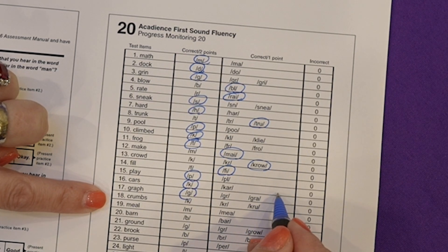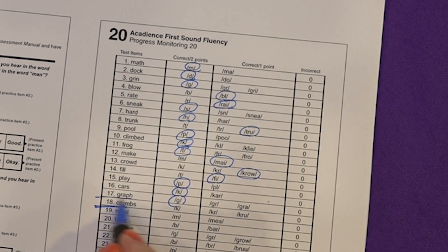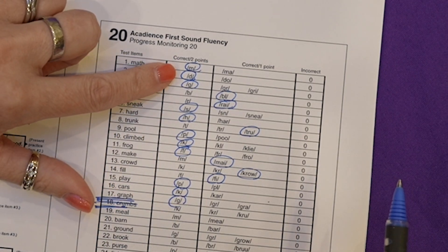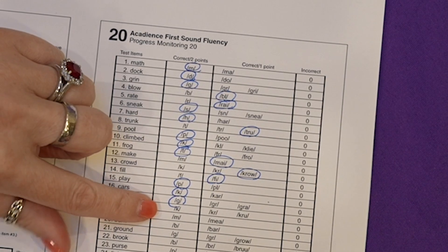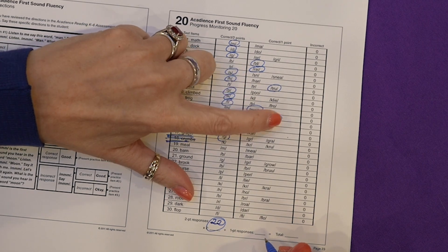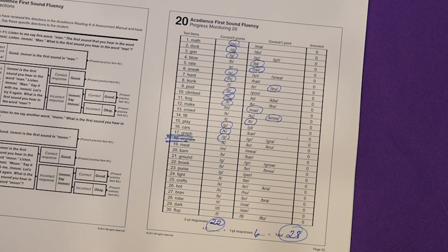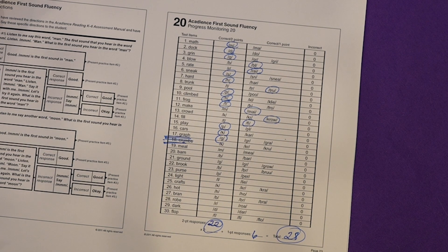Oh, that's where we stop, so I'm going to end there. And I am going to count up my score. So these are my two-pointers: 1, 2, 3, 4, 5, 6, 7, 8, 10, 11 — 22. One point: 1, 2, 3, 4, 5, 6. So we have a total of 28. And that's the score that you will put in your record-keeping and that we will compare to the national norms.